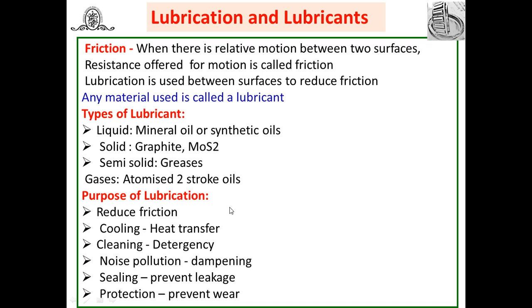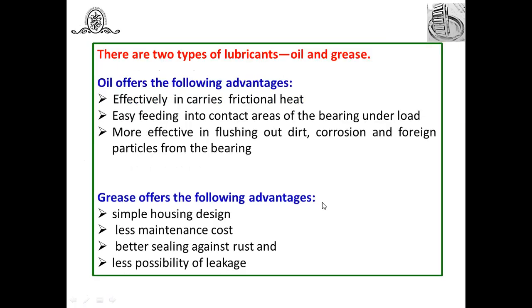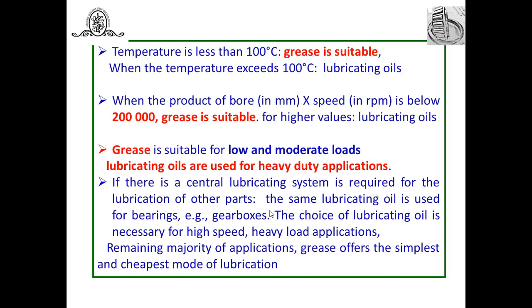In rolling contact bearings, only two types of lubricants are generally used: liquid lubricating oil and semi-solid grease. Oil offers the following advantages: effectively carries frictional heat, easy feeding into contact areas under load, and more effective in flushing out dirt, corrosion, and foreign particles. Grease offers advantages of simple housing design, less maintenance cost, better sealing against rust, and less possibility of leakage.